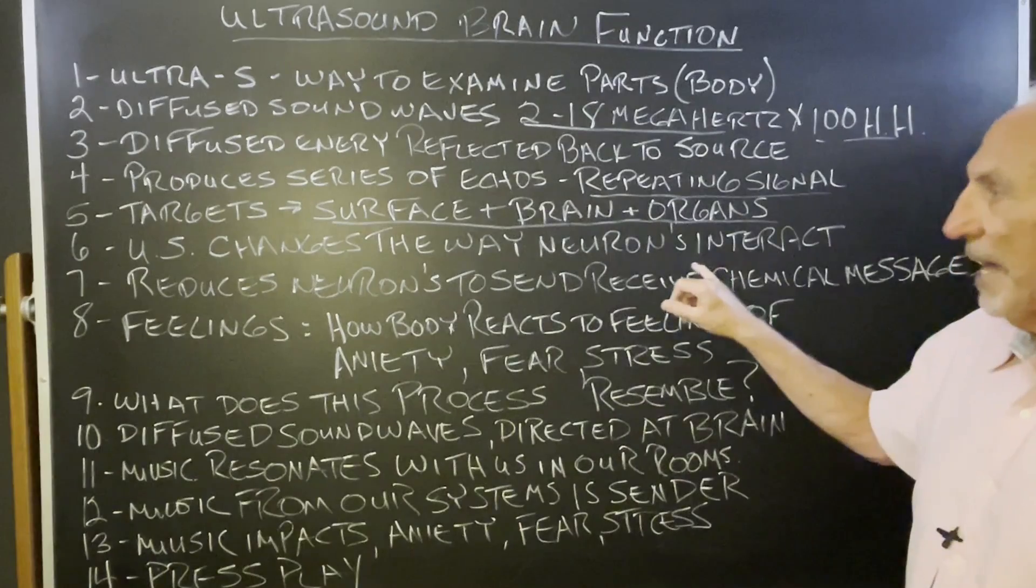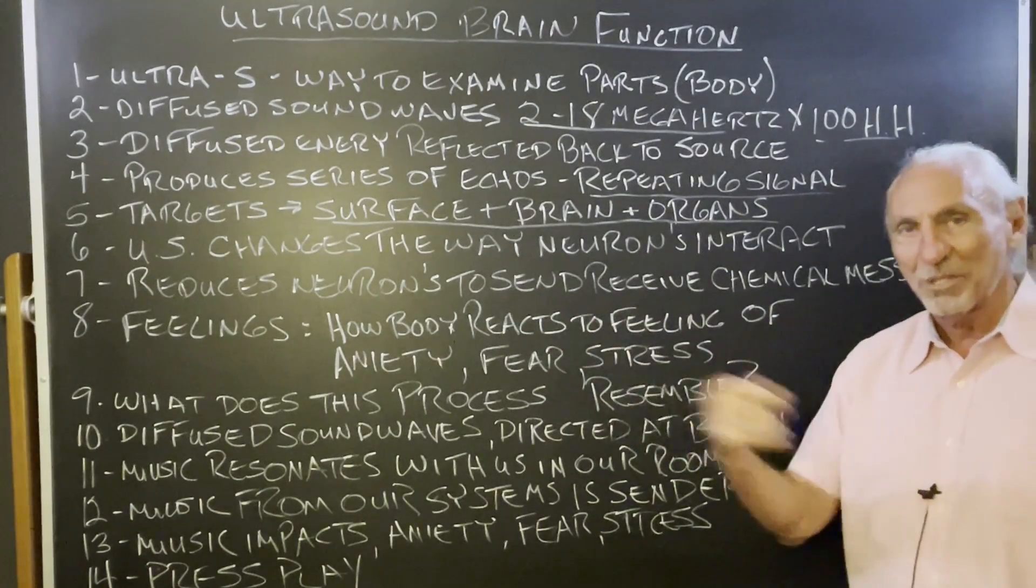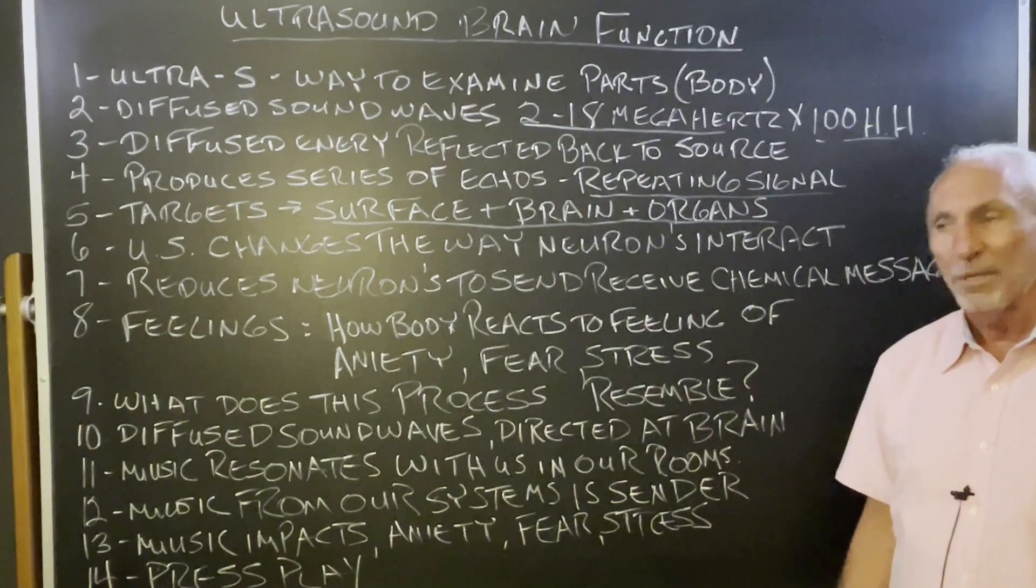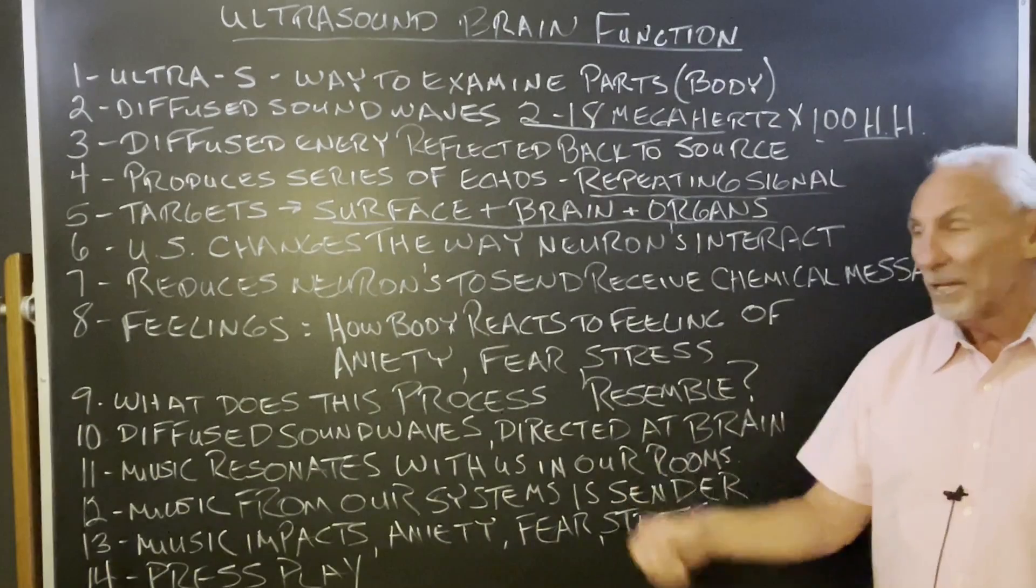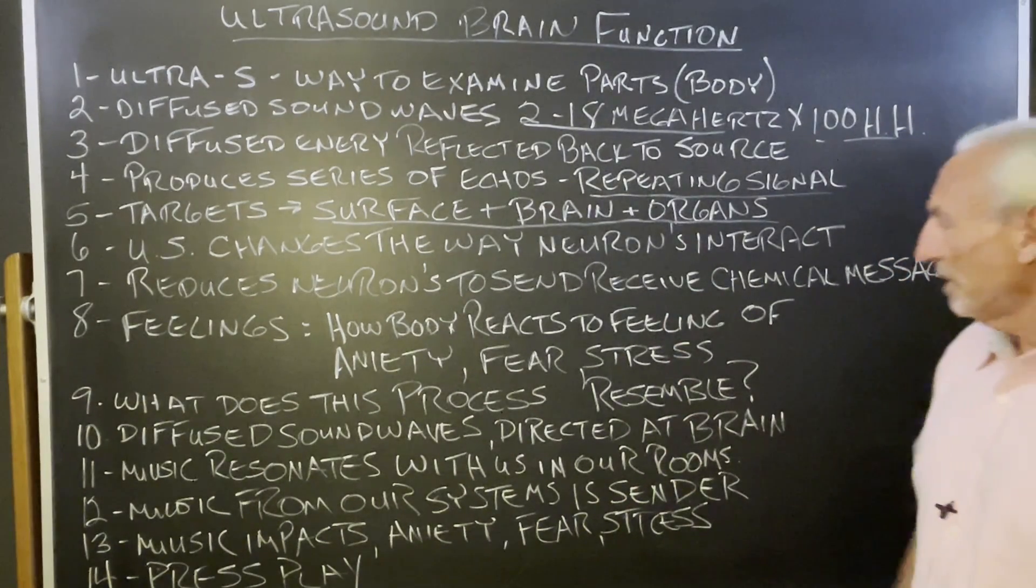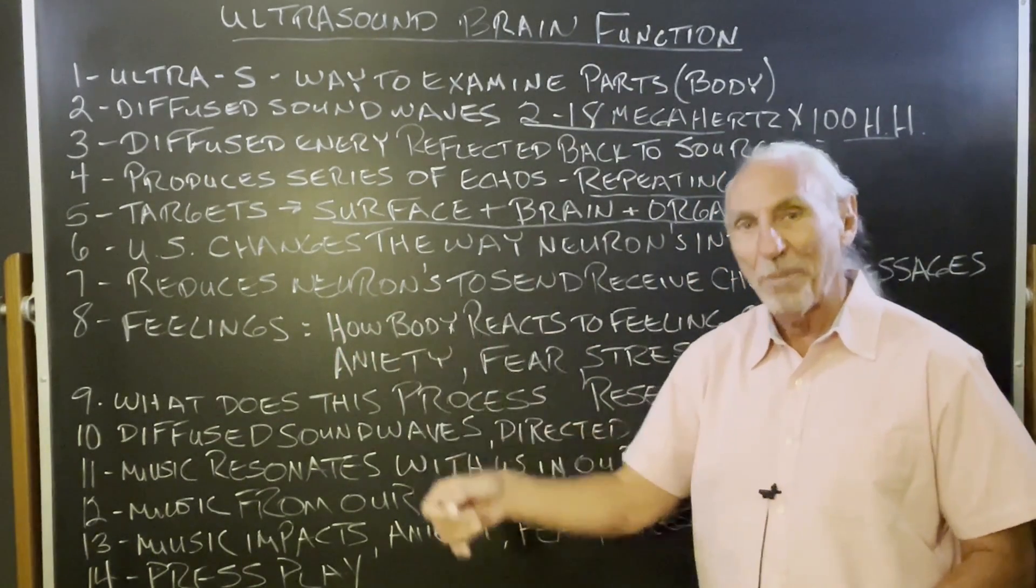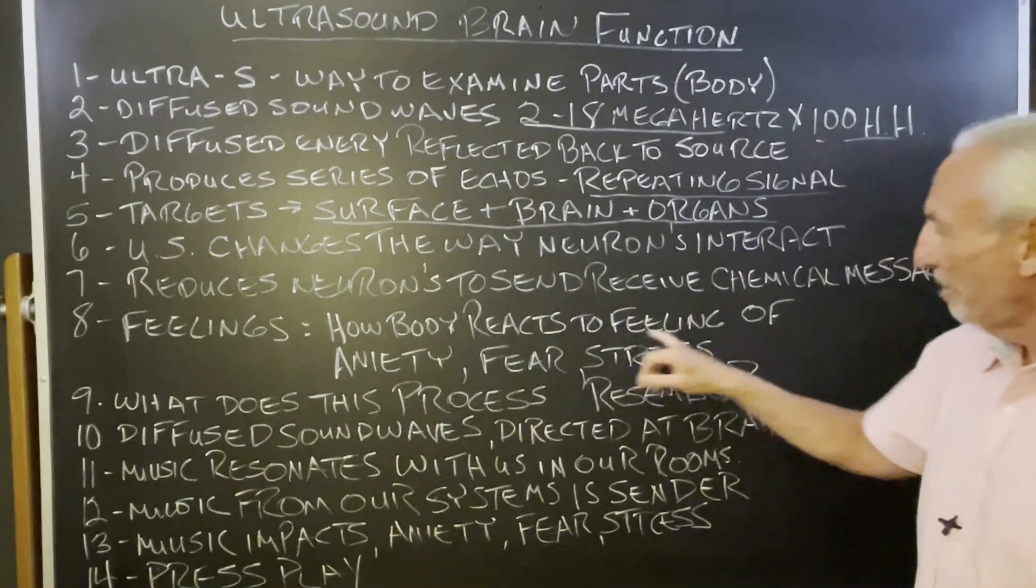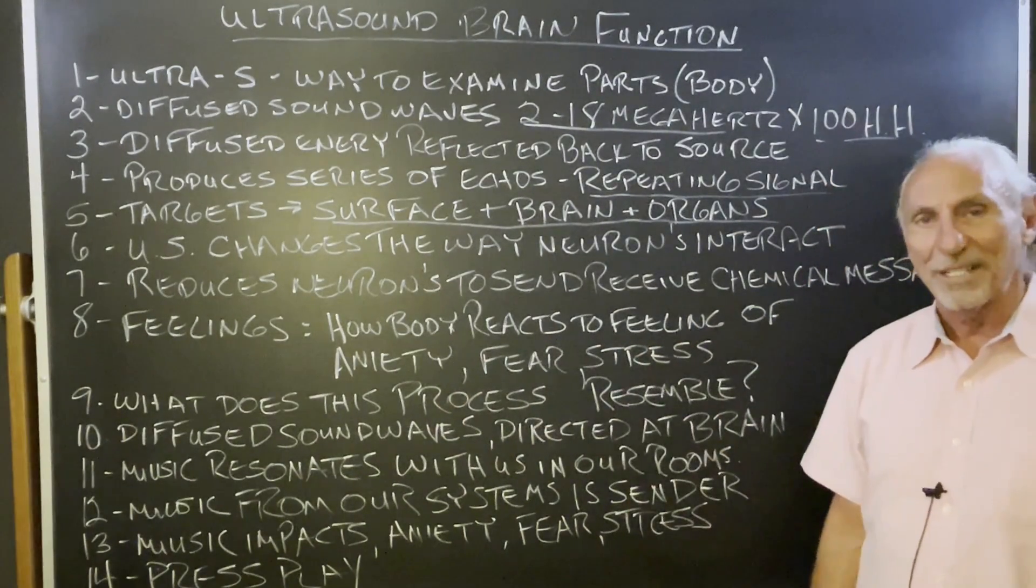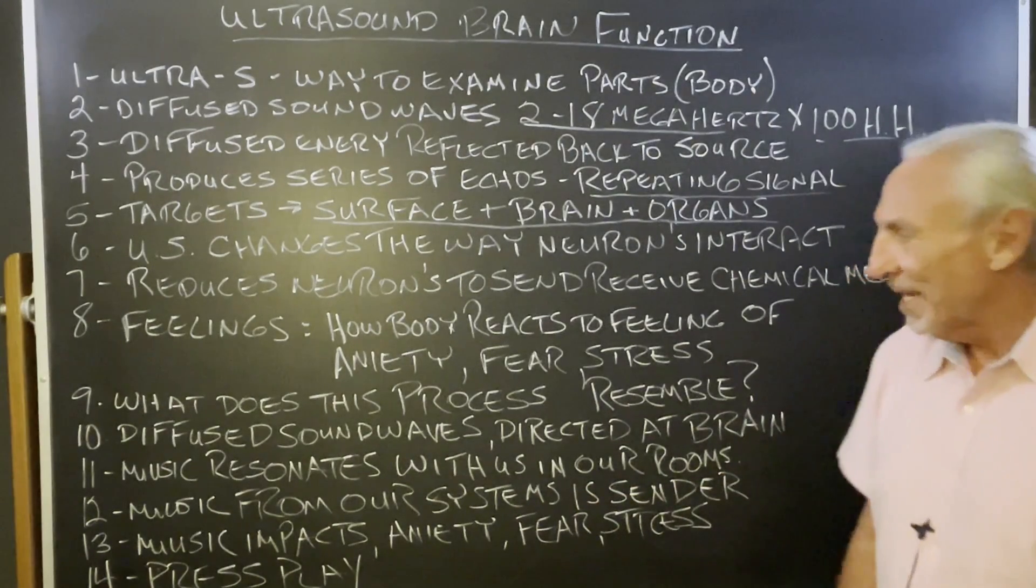So it changes the way it interacts. It reduces its ability to send and receive chemical messages because there's a lot of chemistry interchanging going on between the cells along with current. So you have all of this dynamics, all these systems going on. So it reduces its ability to send. So what happens to feelings when it does that? Because biochemistry is associated with feeling. How the body reacts to feelings of anxiety, fear, and stress has a positive impact on that. So that's kind of interesting.